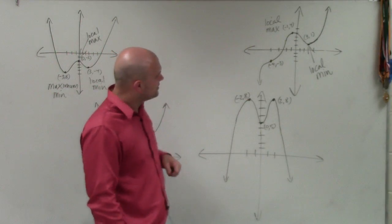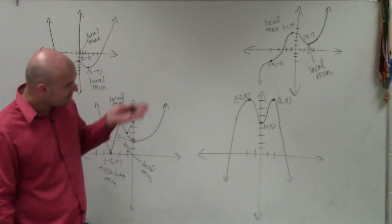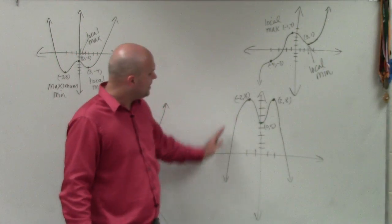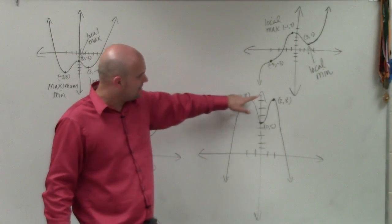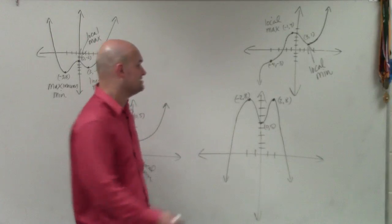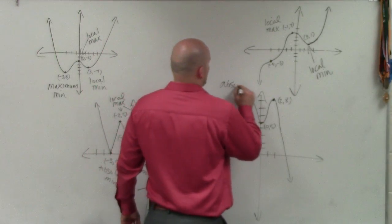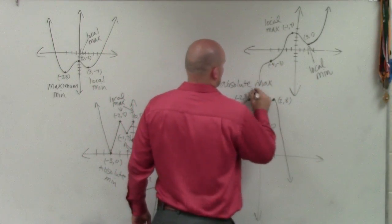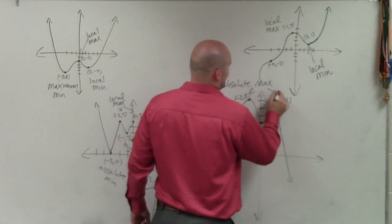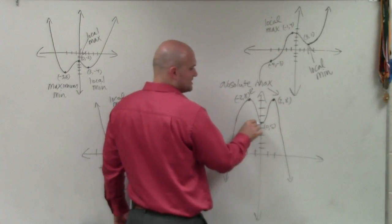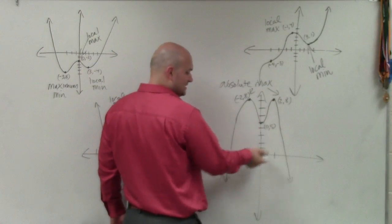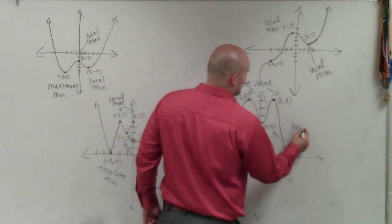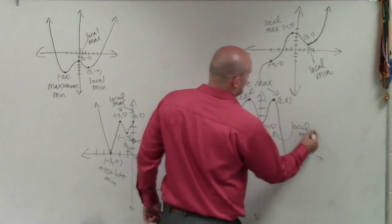Now if we look at this graph, you can see the end behavior is going down. But the graph kind of peaks at two values, and those are going to be our highest values — so those are going to be our absolute max. We have two absolute maxes. And then you can see there's a little down point. It's not going to be the lowest because the graph continues to go down, so that will be a local min.